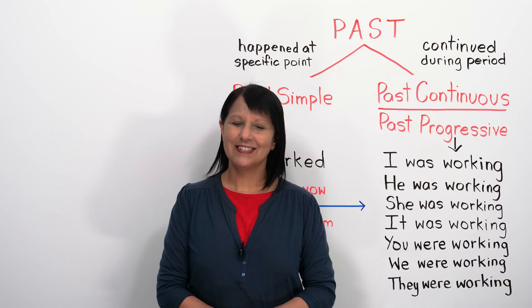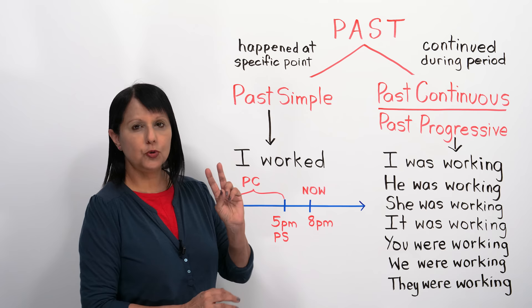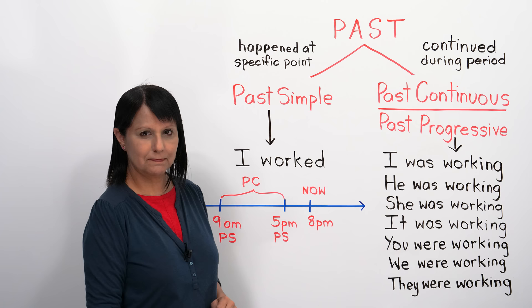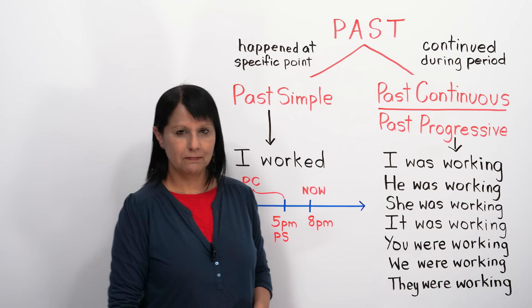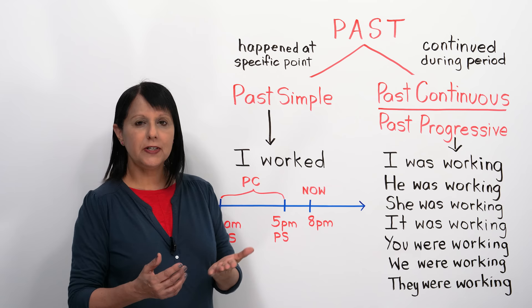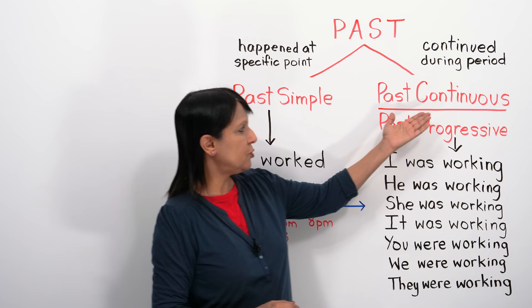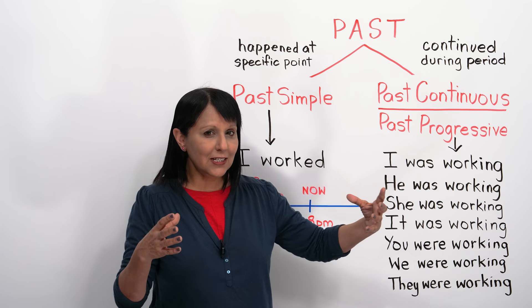When we want to talk about the past in English, there are two basic tenses: the past simple and the past continuous. An example of the past simple is 'I worked.' An example of the past continuous is 'I was working.' When we use the past simple, we are referring to something that happened at a specific point in time. When we use the past continuous, we are talking about something that continued during a period in the past.